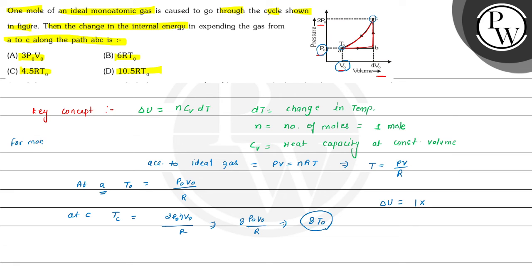So here it is taken as monoatomic ideal gas and for monoatomic gas, the value of Cv that is heat capacity at constant volume is equals to 3/2 R. So we can write here it is 3/2 multiplied by R.